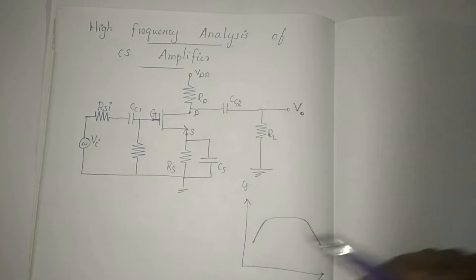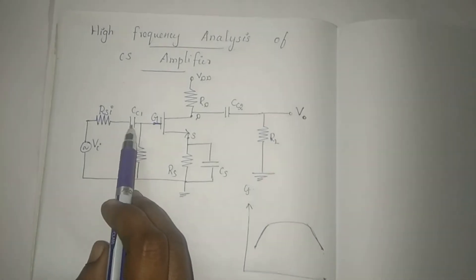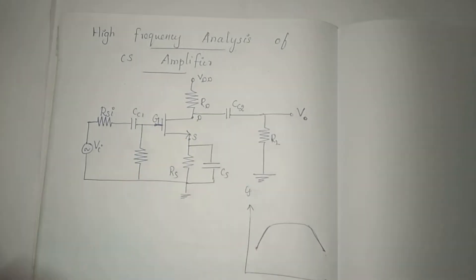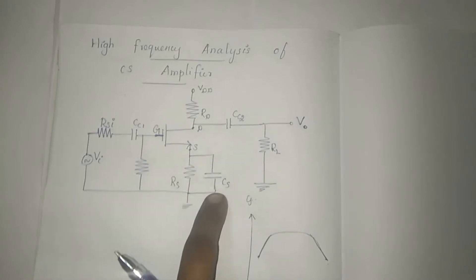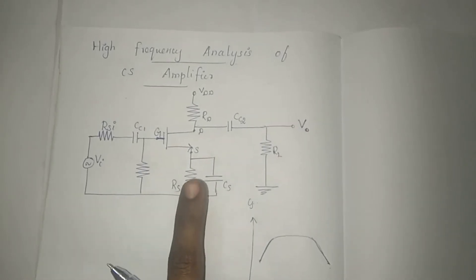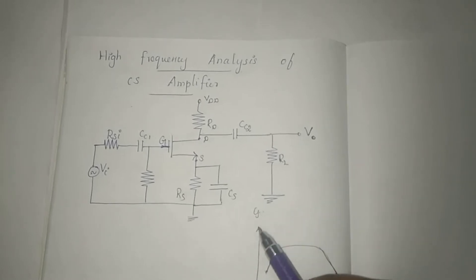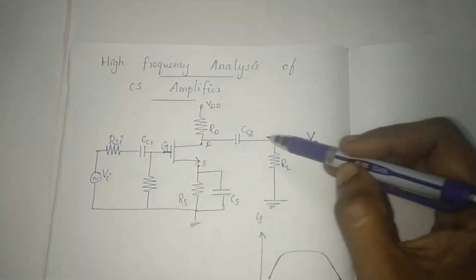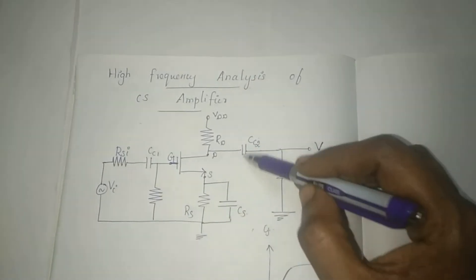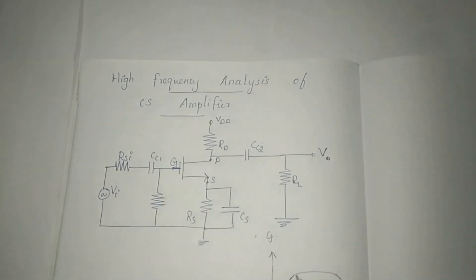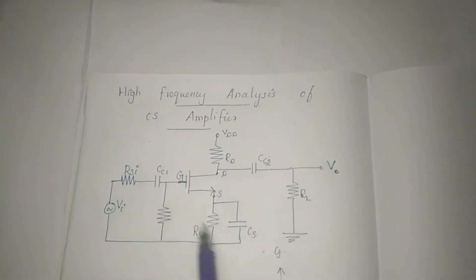The gain level decreases due to capacitance. We have two coupling capacitances and one bypass capacitance. CC1 and CC2 are coupling capacitances, and the bypass capacitance is an external capacitance that affects low frequency behavior.